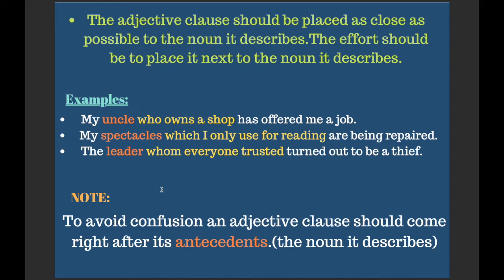I'll take certain examples later to show how incorrect placement can create different meanings. For your convenience, I have used different colors: nouns are in orange and adjective clauses are in yellow. In the first example — 'My uncle who owns a shop has offered me a job' — the noun is 'uncle' and the adjective clause is 'who owns a shop,' placed immediately after the noun.